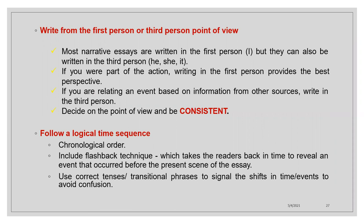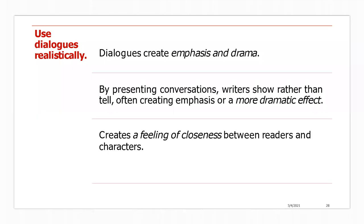Write from the first person or third person point of view. Most narrative essays are written in the first person 'I,' but they can also be written in the third person 'he,' 'she,' or 'it.' If you were part of the action, writing in the first person provides the best perspective. Follow a logical time sequence using chronological order. You can include flashback techniques and use correct tenses or transitional phrases to signal shifts in time. Use dialogue realistically — dialogues create emphasis and drama by presenting conversation, which shows rather than tells, creating a feeling of closeness between readers and characters.